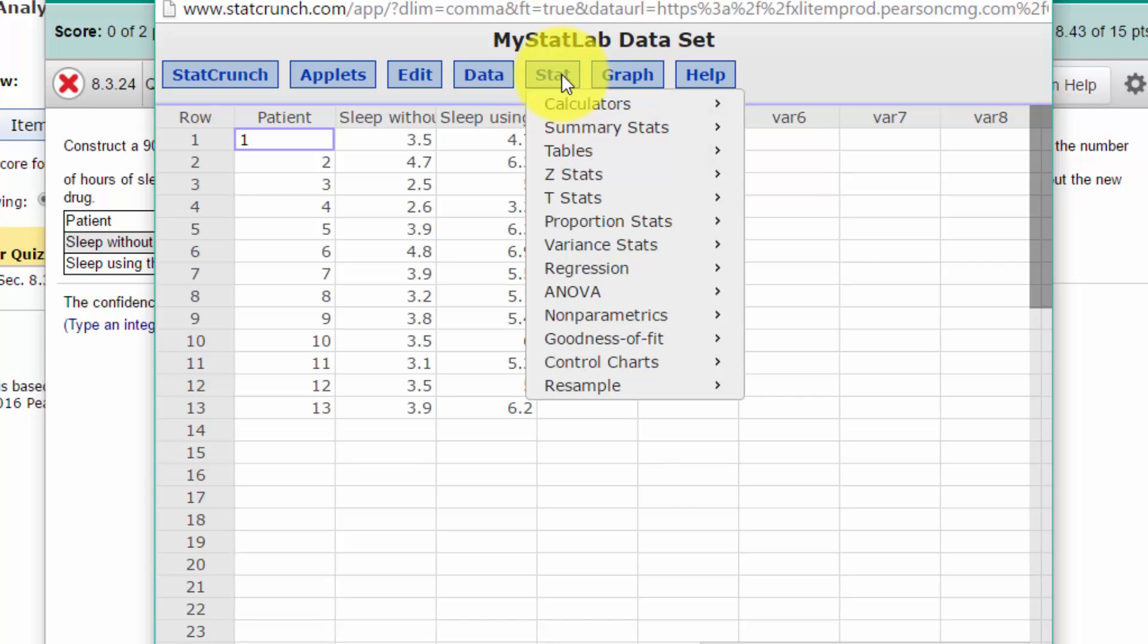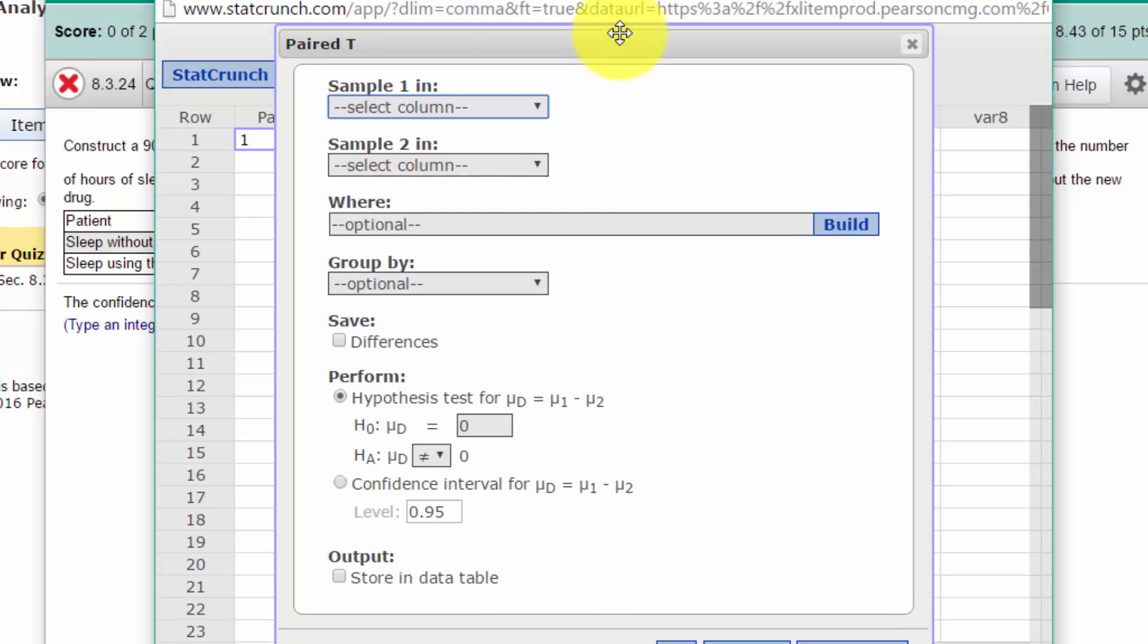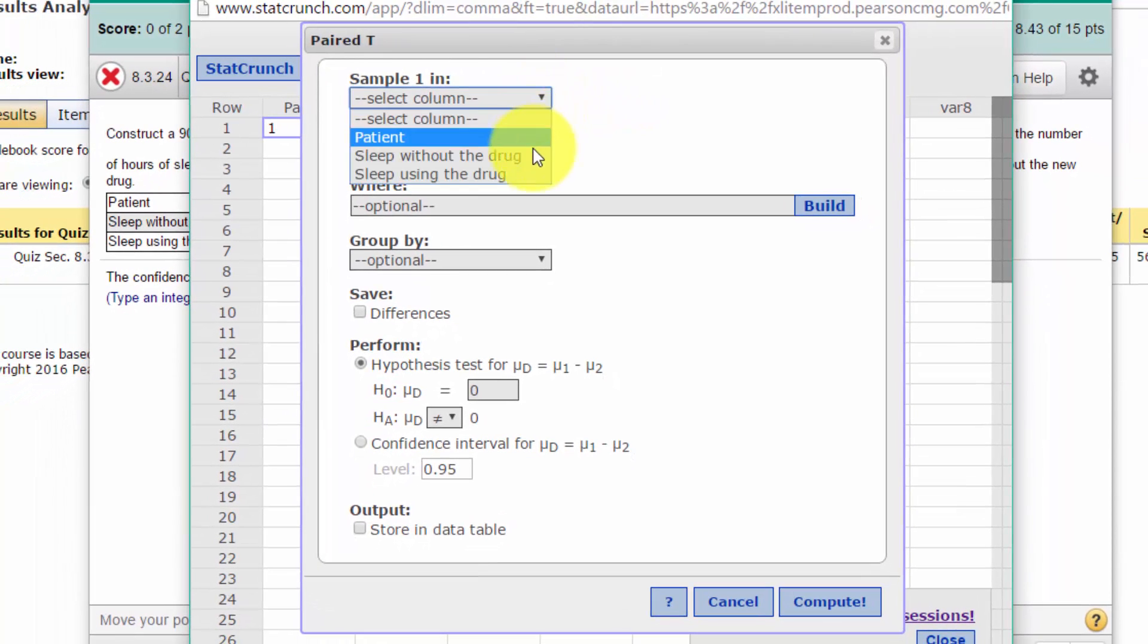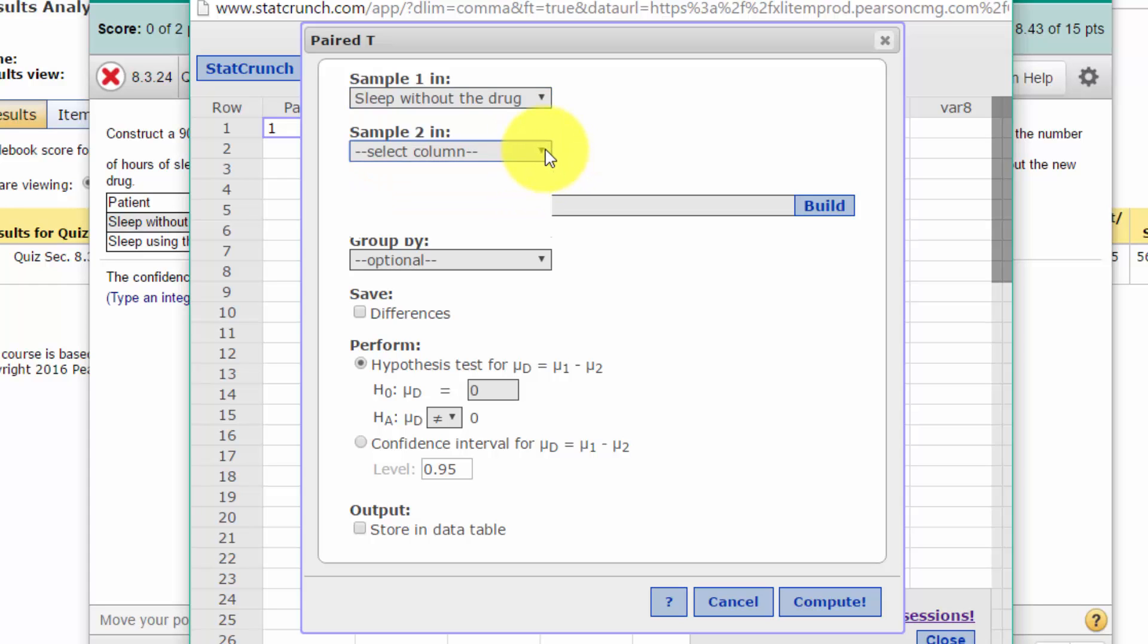We go to Stat and we go to T Stats, Paired, because it's paired sample. We open up this dialog box. We want to select sample one, which would be the sleep without the drug, and sample two, sleep using the drug.